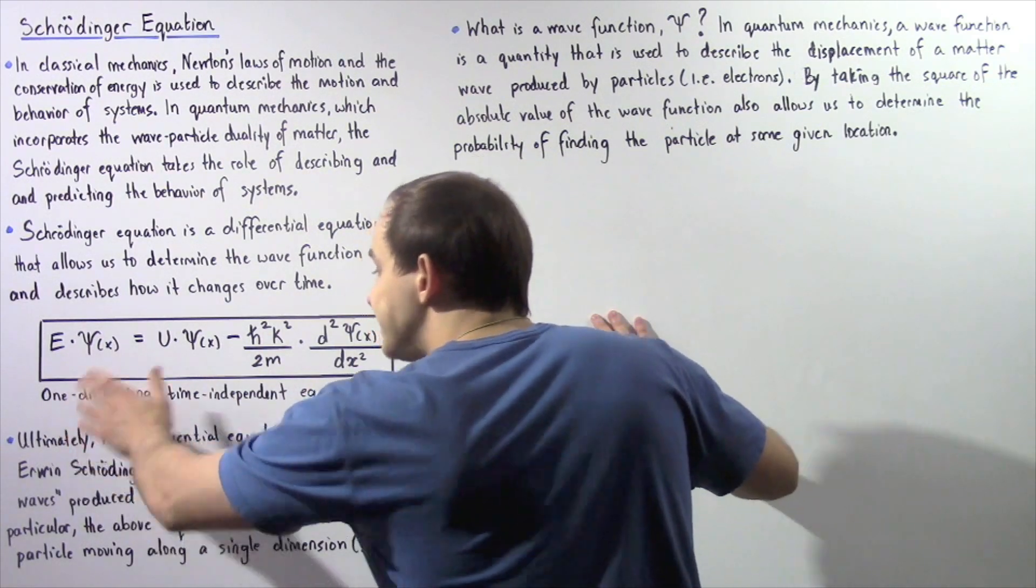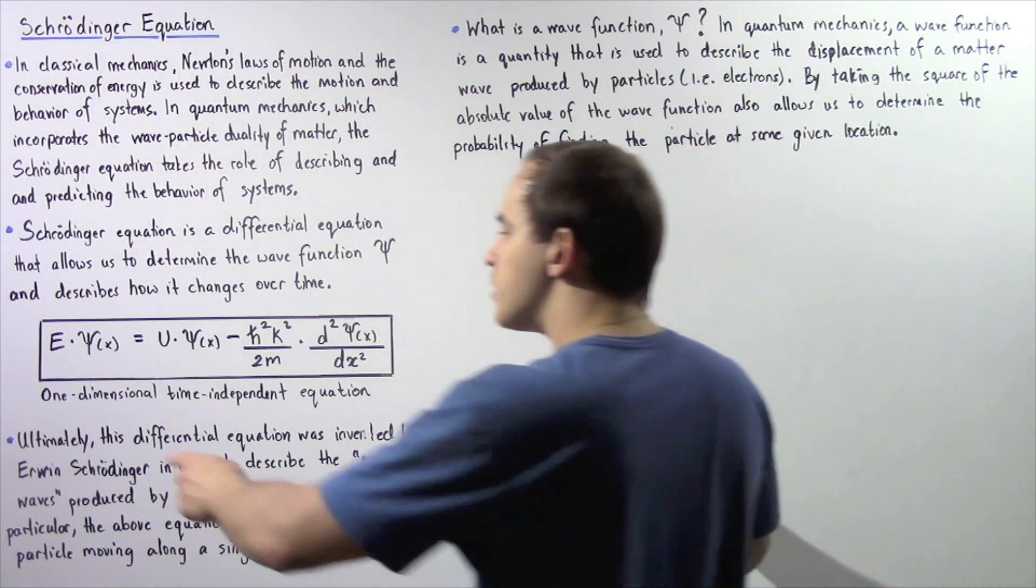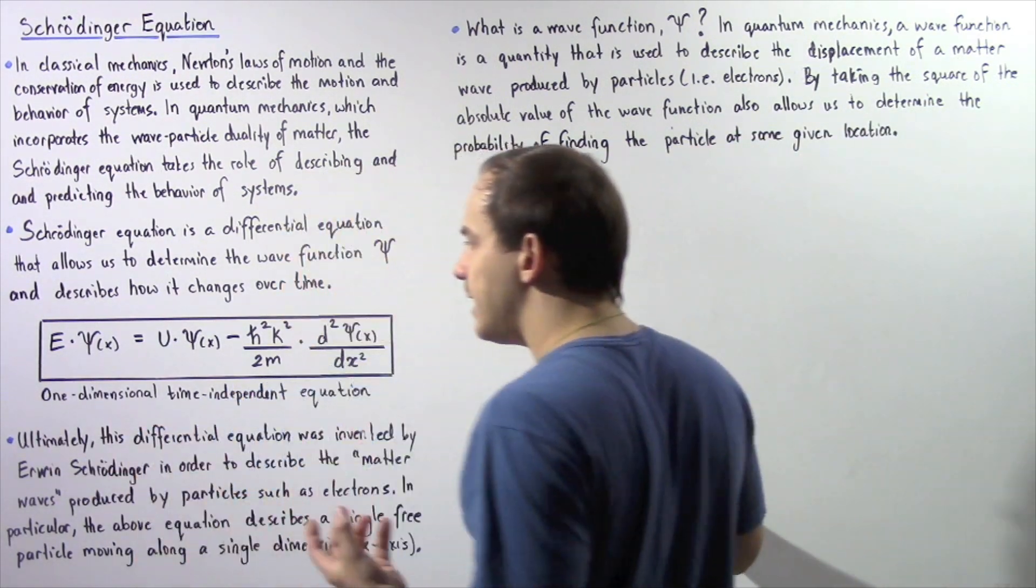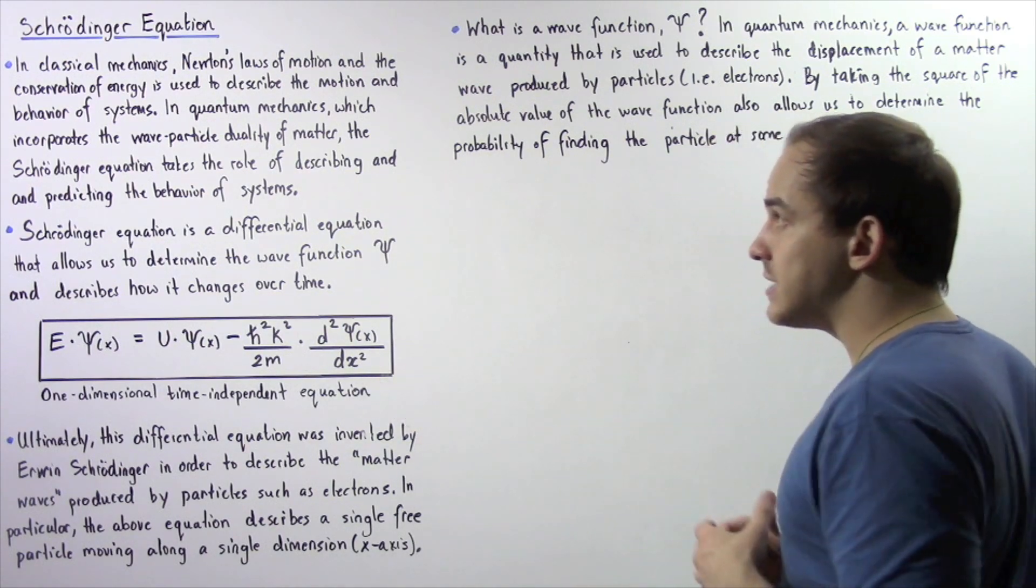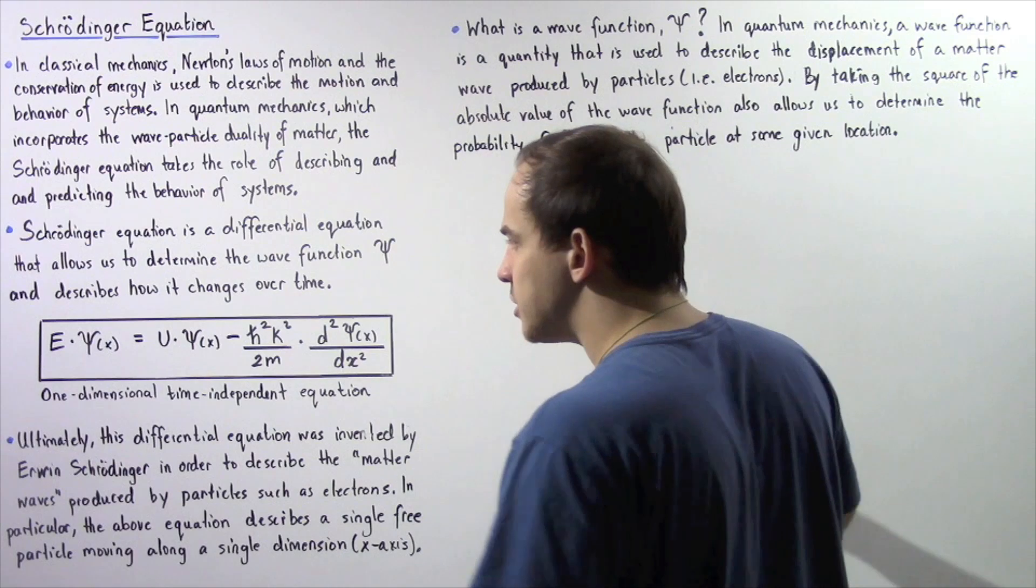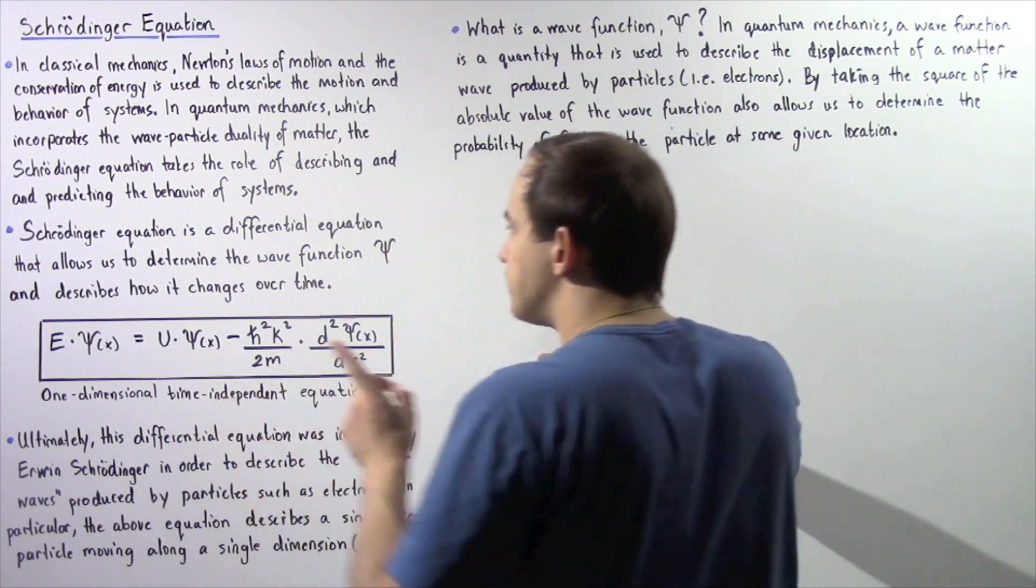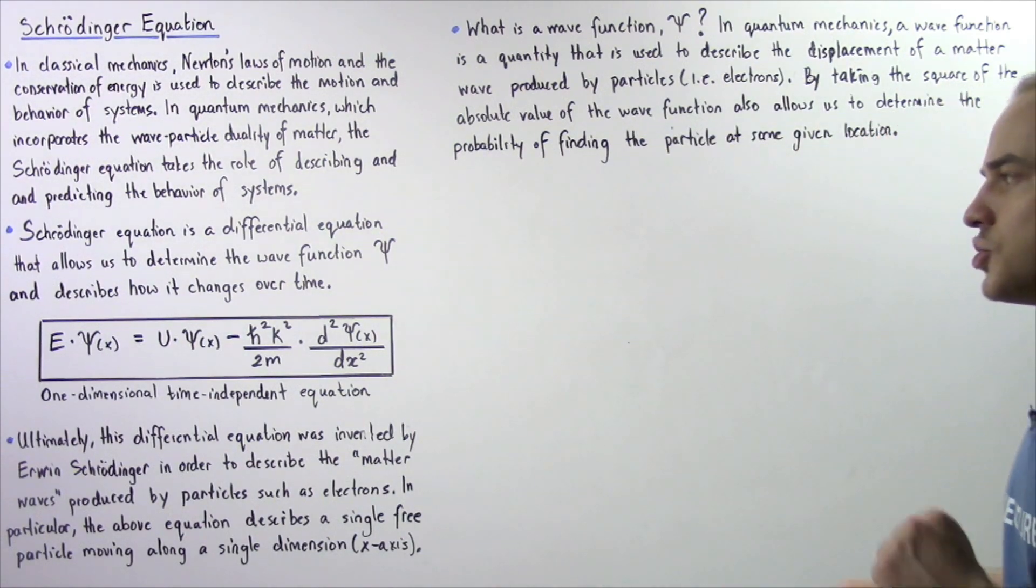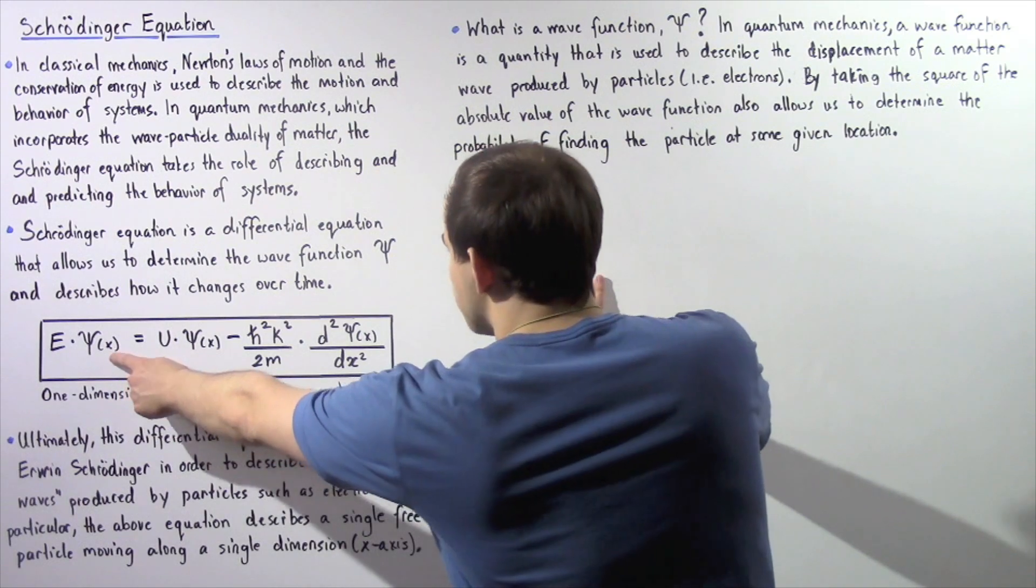This is the one dimensional non-relativistic time independent equation. So the one dimensional part means that our object, our system in this case, let's say the electron, is traveling along a single dimension, in this case along the x-axis. The time independent part means that the wave function does not depend on time, it only depends on our position.